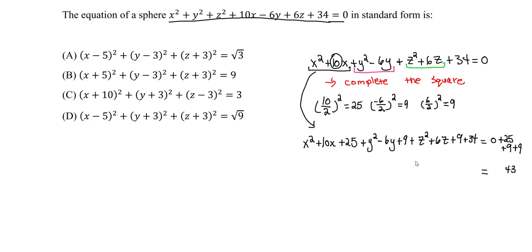Now we complete the reduction — these are perfect squares. x squared plus 10x plus 25 reduces to x plus 5 squared.